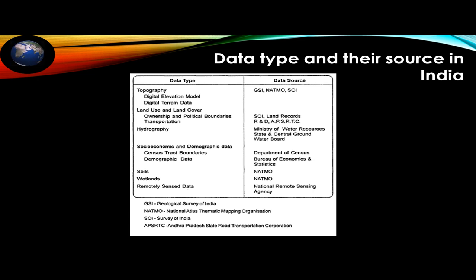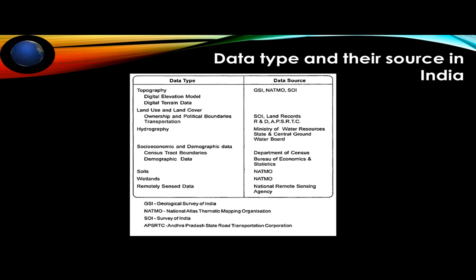Ministry of Water Resources and state/central government water boards deal with hydrography datasets — rainfall data, stream discharge data, temperature and climate data. Socio-economic data is mostly with the Census Bureau, like Survey of India and the Department of Economics and Statistics, which collect population data. Earlier census was done manually by going door to door; now with Aadhaar card everything is in an online database.